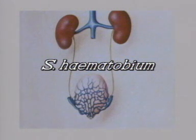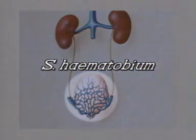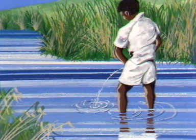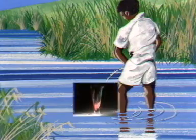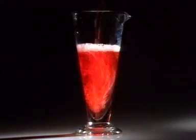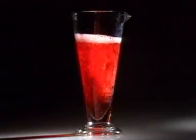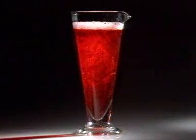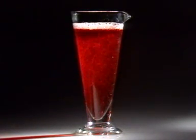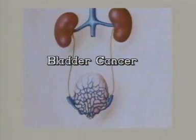Schistosoma haematobium differs from the other two species. It inhabits the blood vessels of the bladder and its eggs are discharged with the urine. The main clinical sign is haematuria, but ultimately fibrotic lesions may develop throughout the whole of the urogenital system. Bladder cancer is not an uncommon development in advanced stages of the disease.